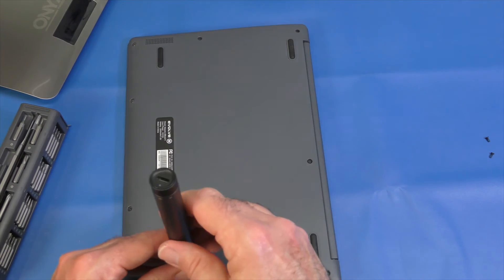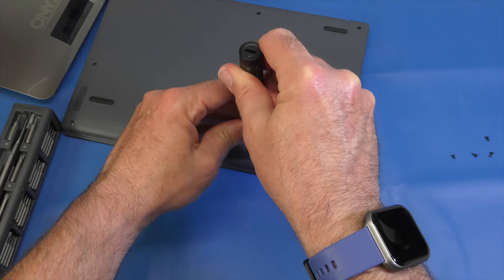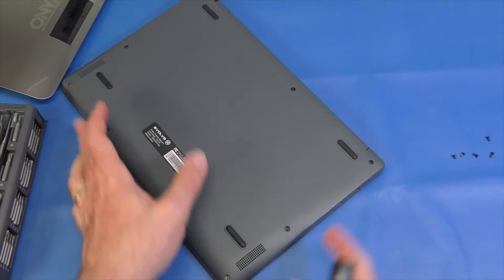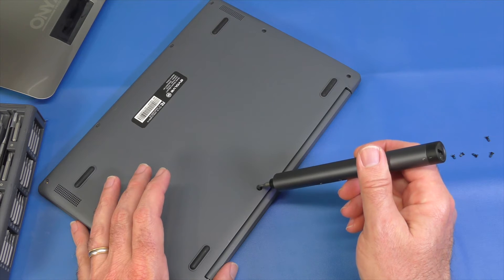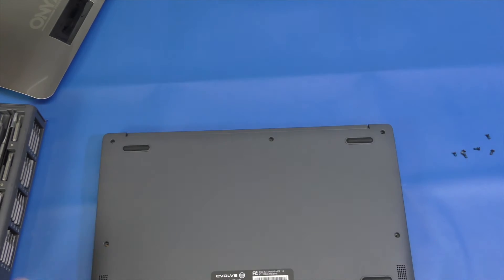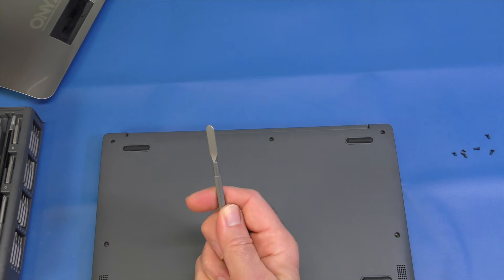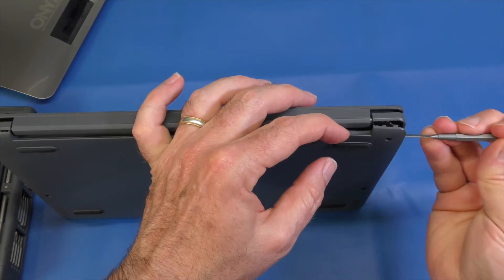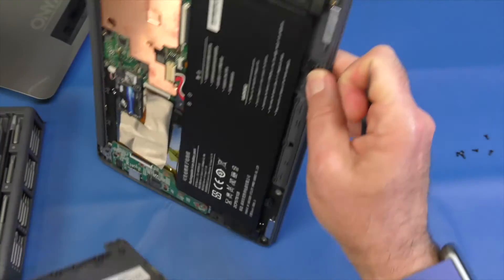All right. So we have this one screw back here that's being a jerk and it doesn't want to come up. There it goes. Whoops. And then there you go. We dropped it. I wonder if we could use the spudger and now pops right off.